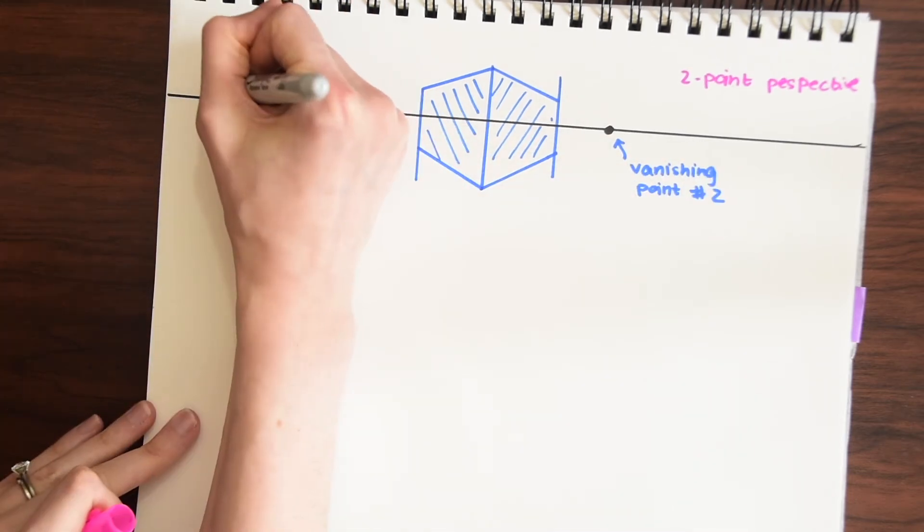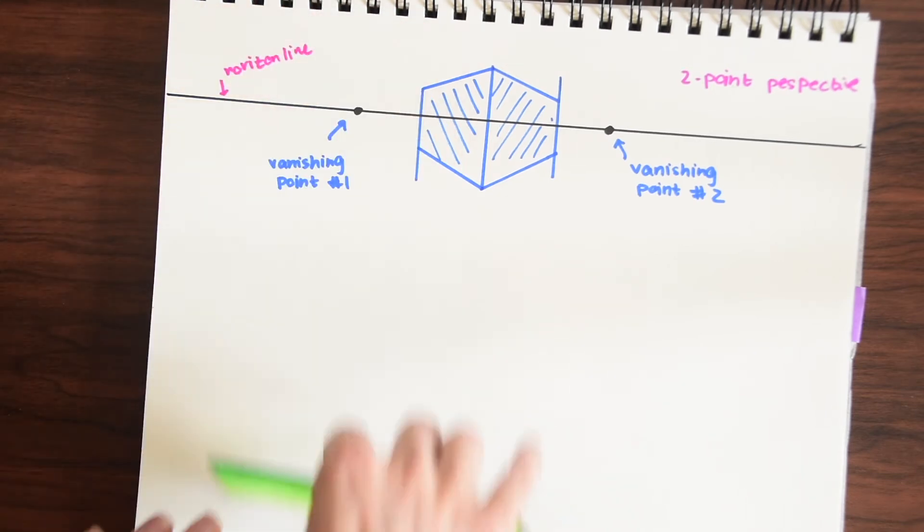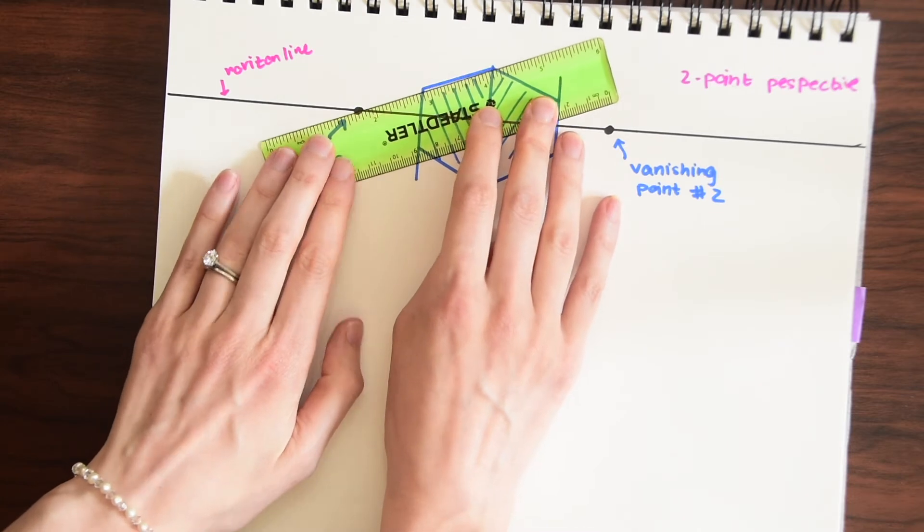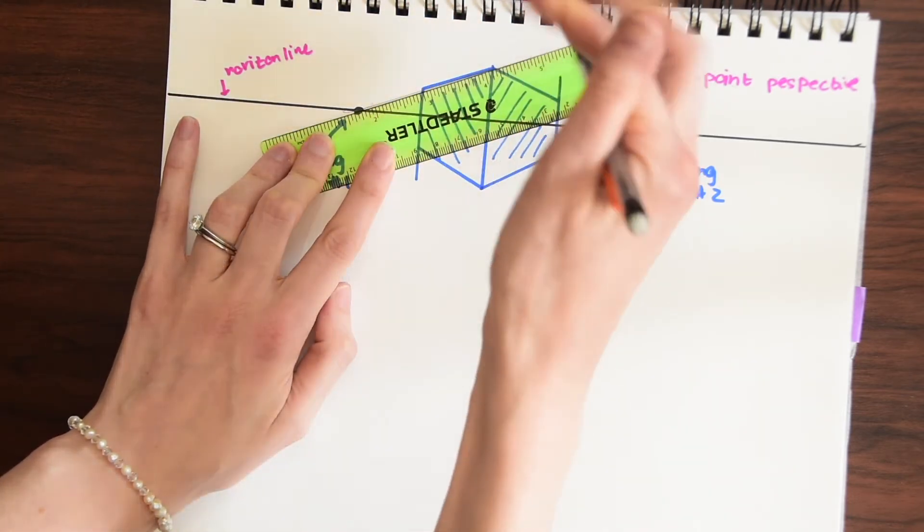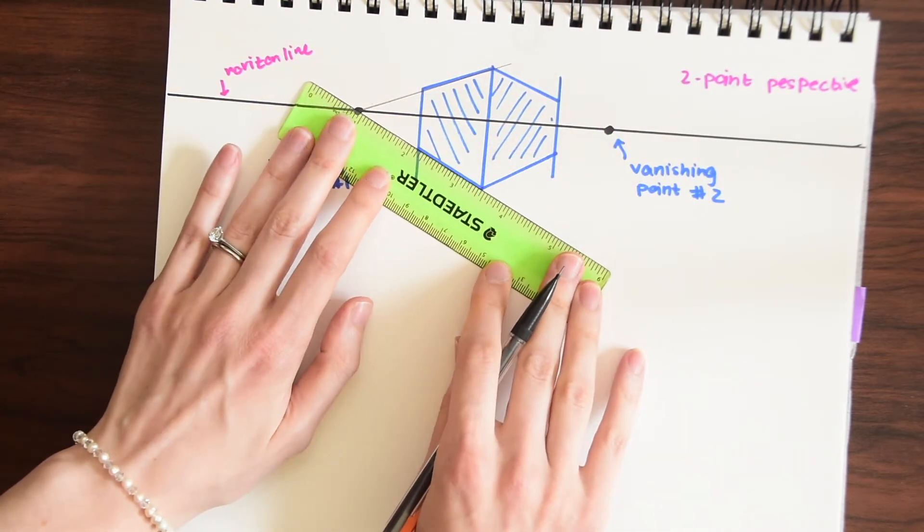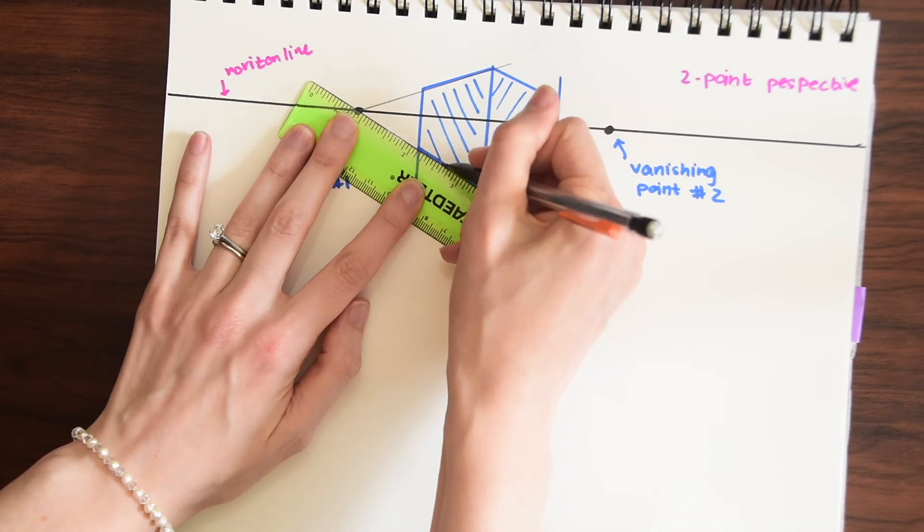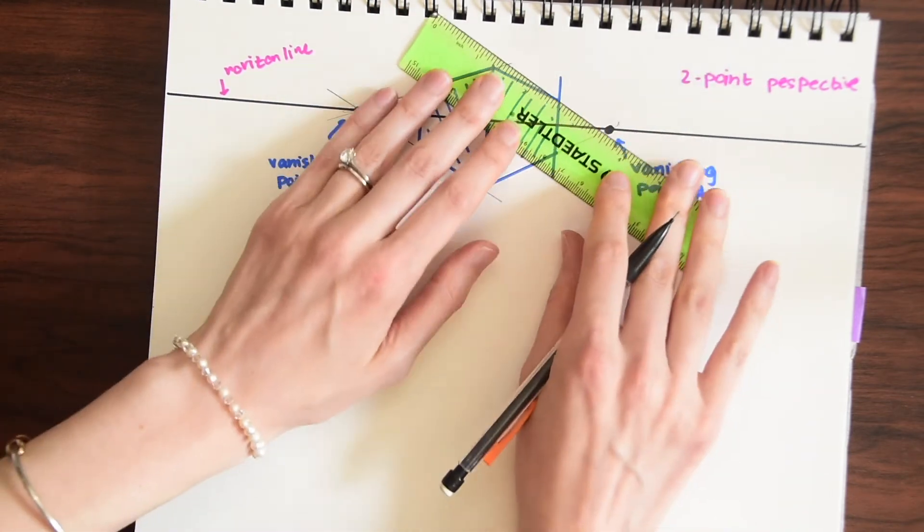So we still have our horizon line. And now we have two vanishing points. And notice this box was drawn with respect to these two points. So if we drew out lines they would align exactly with our box with our 3D shape here. So that's where these lines came from.